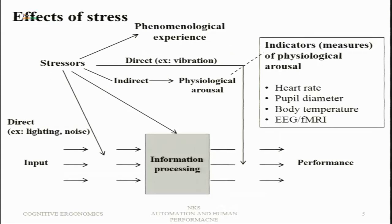Stress and strain go together; one is the consequence of the other because of external forces. There is also physiological arousal in the human body, which is related to performance and to stress, and then there is a performance change. Stressors generally come from the environment — for example, direct stressors in the form of ambient conditions such as light and noise, which are present in the environment and come as input to the performance situation.